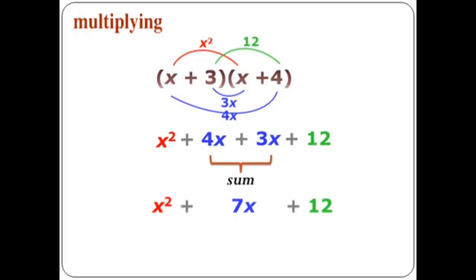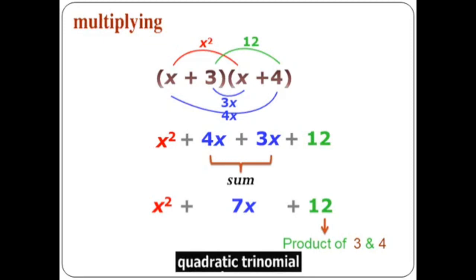So remember that the middle term comes from the sum of the two numbers, and the last term is the product of the last numbers — three and four give 12, and the second terms of each bracket give the middle term. So I have x squared plus seven x plus 12. This expression we call a quadratic trinomial.